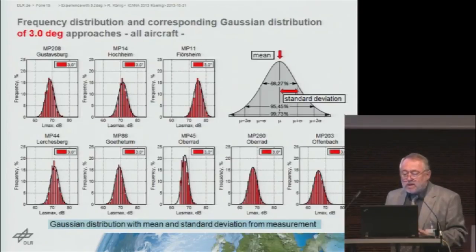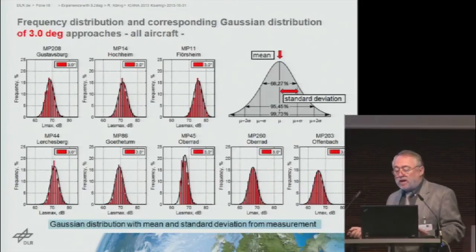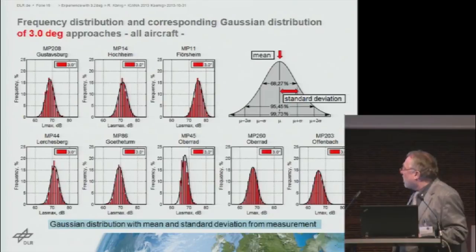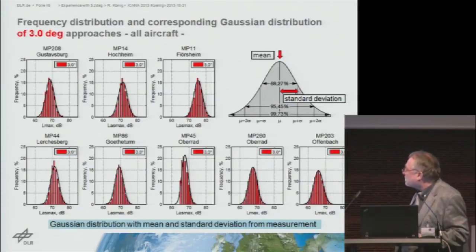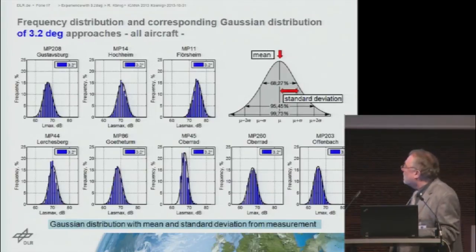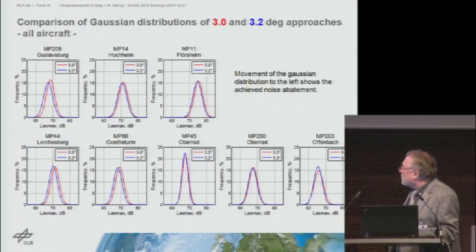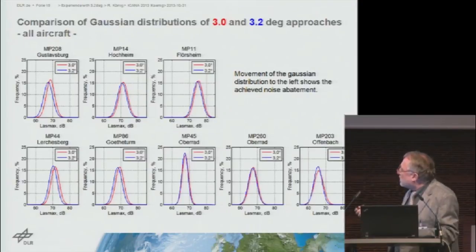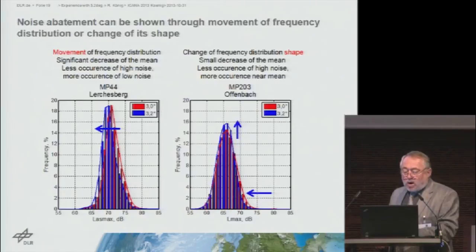Now it gets more complicated. This is the frequency distribution analysis we conducted. We have some normal distribution — the black curves — using the means and standard deviation. We also have the Oberrat measurement point, point 45, with some cutoffs in the lower levels. The same analysis applied to 3.2 degrees shows that the frequency distribution moves to the left at almost all measurement points — not in Offenbach, but at the Göteturm and Lerchesberg.